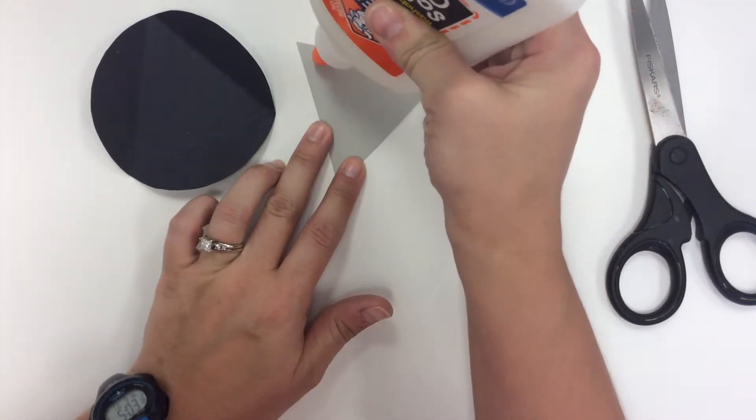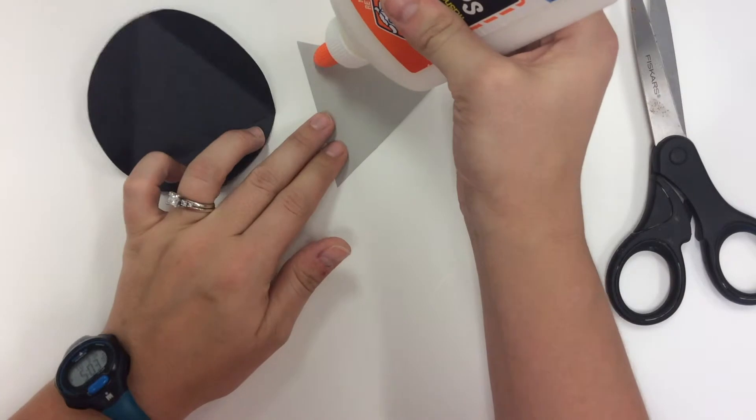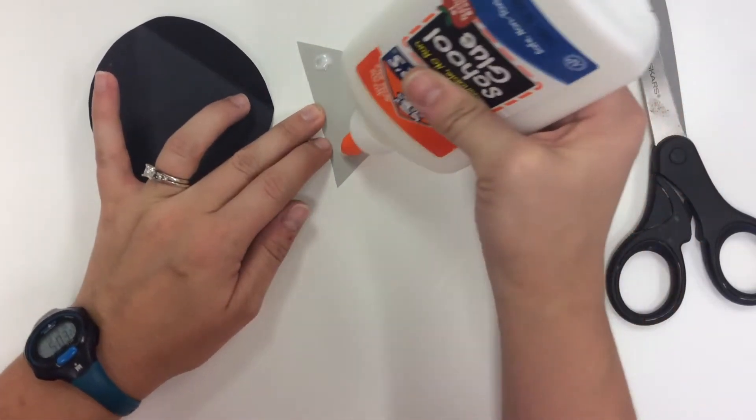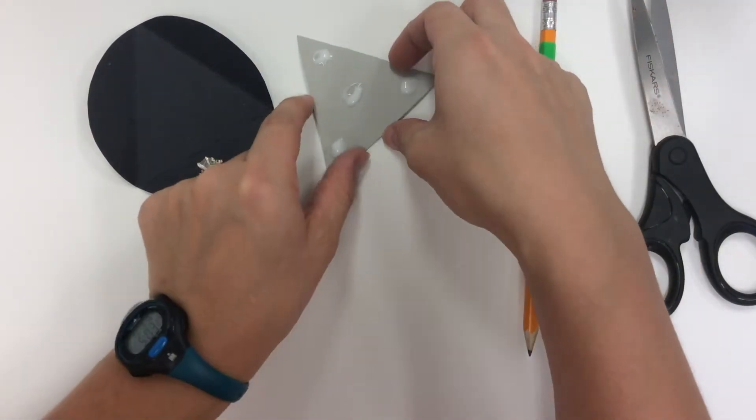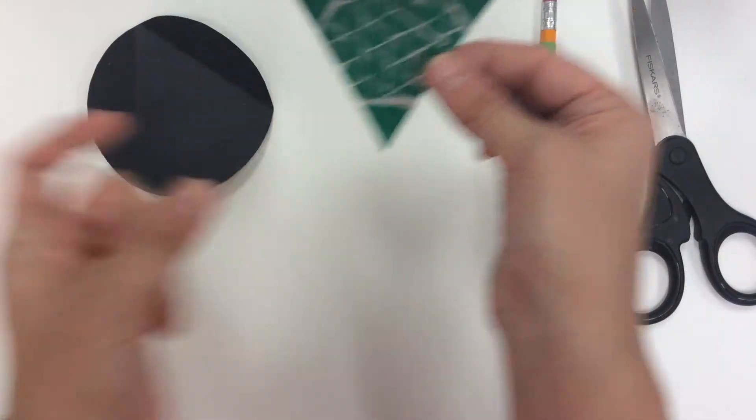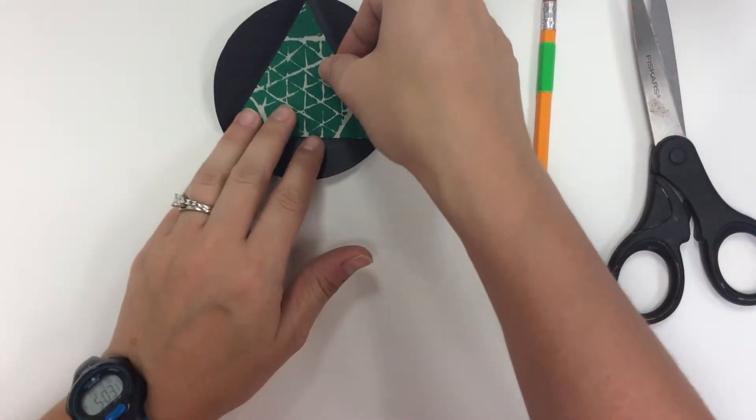What that means is you're going to put a dot of glue in each corner of your triangle and one in the middle. Notice I have not covered the entire back of my triangle in glue. If we do that, it's going to make your front design very sticky.